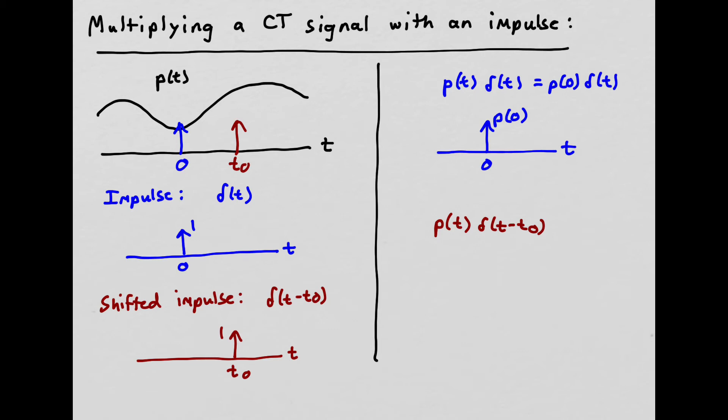But now what we're going to get, and when we do this multiplication, we get 0 everywhere here and 0 everywhere here, but now we pick up the value of P of T at time T0. So what we'll get back out is we'll get P of T0 is the area of the impulse, and that impulse will be at T0. So we have an impulse at T0 with an area that's equal to the height of the signal P of T at T0. So that's what we get when we multiply a continuous time signal with an impulse.